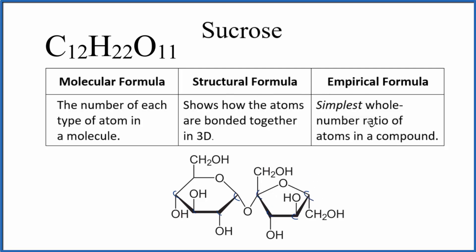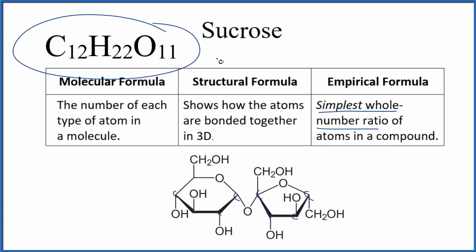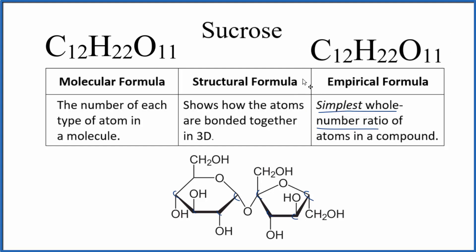Finally, the empirical formula. That's the simplest whole number ratio, so we're really looking for a whole number ratio from our molecular formula. The problem is, with this molecular formula, we can't reduce this down any further. We can't divide each number by the smallest number — 11 — and get whole numbers. It just doesn't work. For that reason, the empirical formula is the same as the molecular formula. For sucrose, there's not a difference between the molecular formula and the empirical formula, because this is already the lowest ratio for these atoms.